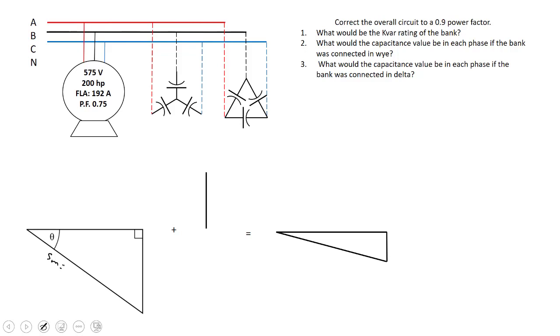The best bet in this case is to figure out the apparent power of that motor by using V line times I line times root 3. So if I did that I would take 575 times 192 amps times root 3. We're looking at about 191,218 VA.